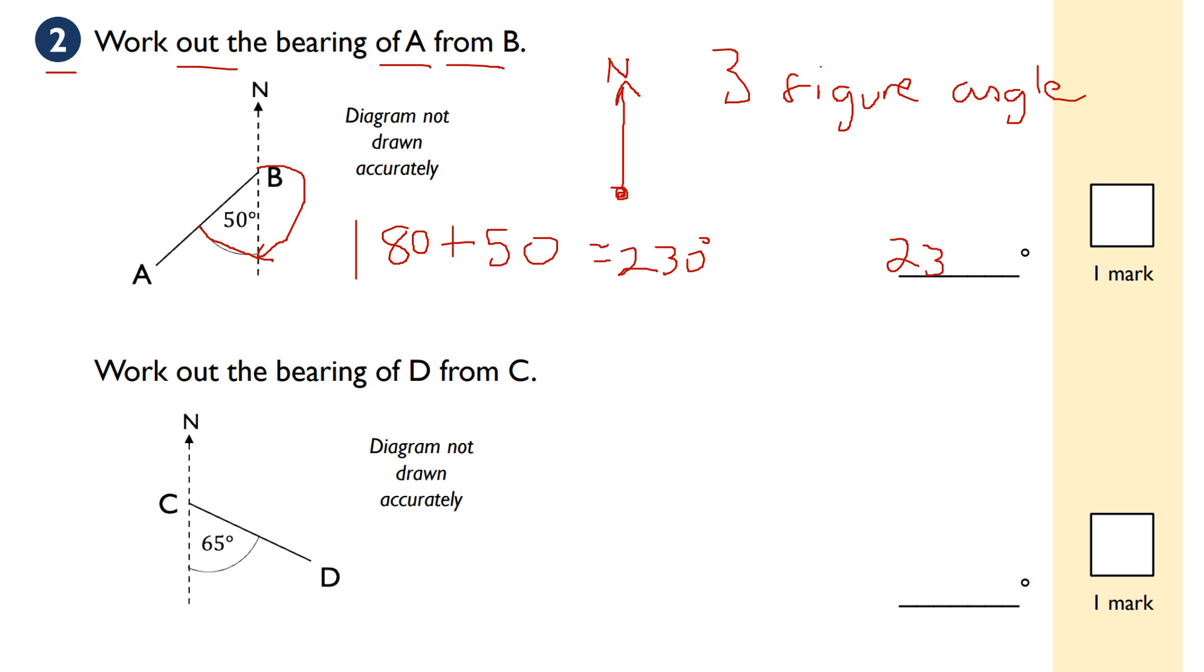Next, work out the bearing of D from C. We start at C and measure to D - it's this angle here. I know angles on a straight line add to make 180. I want this angle, so I'll call it X.